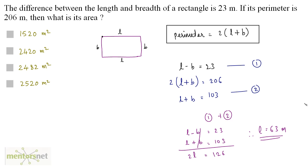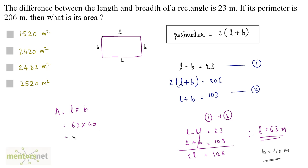We've got the length. For the breadth, put the value of length into equation 1: breadth equals 103 minus 63, which equals 40 meters. Area equals length into breadth, that is 63 times 40, which equals 2520 square meters. So option B is the correct answer.